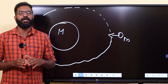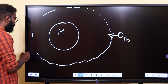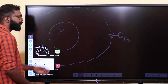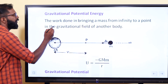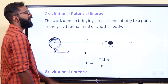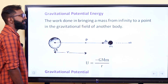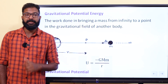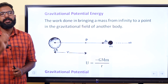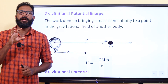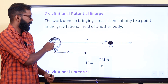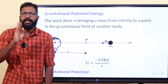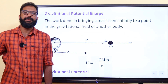What is the gravitational potential? It is the work done to bring a unit mass from infinity to a point in a field. What do we call infinity? Where is the mass? What is the field that we call infinity?